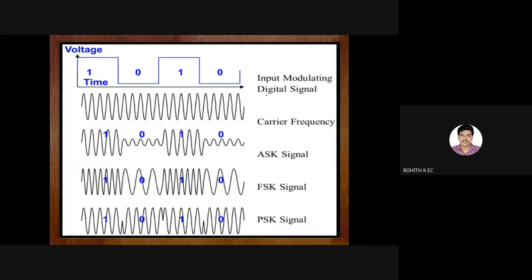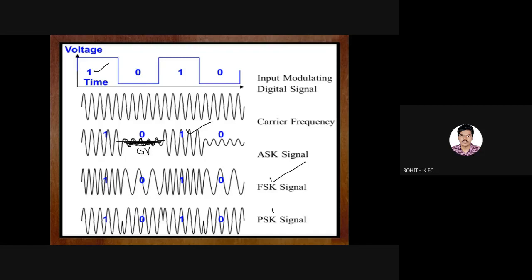In ASK, logic 1 is represented by a carrier signal and logic 0 is represented by an almost-zero amplitude signal. Theoretically we write it as zero amplitude, but practically there will be a small signal with negligible amplitude — not a completely flat signal. Similarly we have FSK and PSK and their representations.